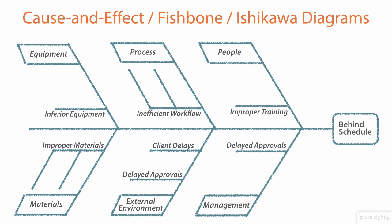Within a few of these, we might see secondary causes. If an inefficient workflow is causing us to fall behind schedule, maybe our steps aren't optimized — we're simply taking too many steps on a process and could trim them down. Or we could have duplicative work, such as using different code to accomplish the same task in a software application. When it comes to materials, they might be of poor quality or simply the wrong materials entirely. Fishbone diagrams can be very helpful in getting past generic answers to find not just surface issues but what's truly causing delays or problems within your project.